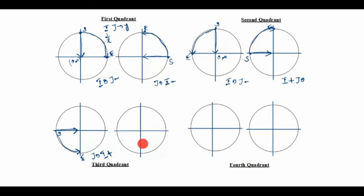In the same third quadrant, reverse the start and end points. Start point is here, end point is here. Draw the arc from here — the arrow goes this way. On the X-axis, the end position is here, so I is 0. For the Y-axis, the arrow goes up — up means J is plus.